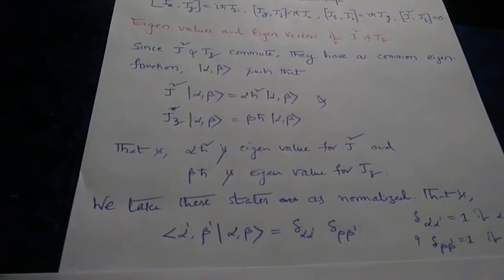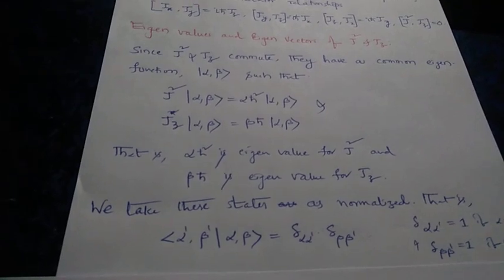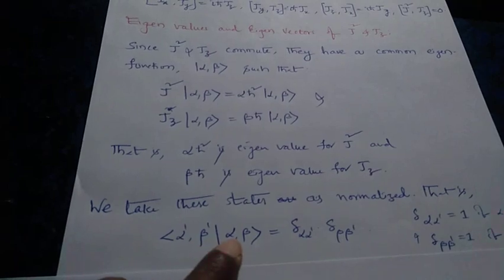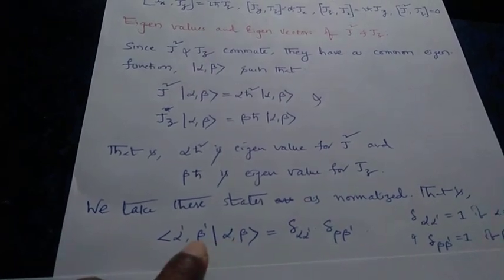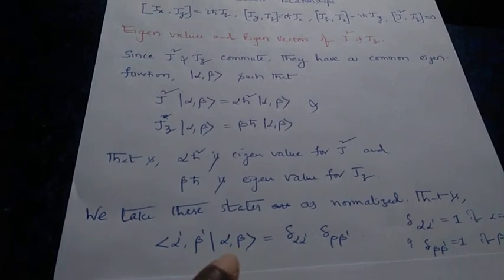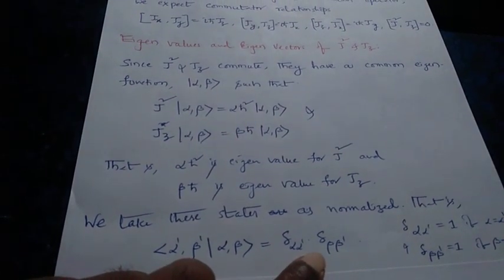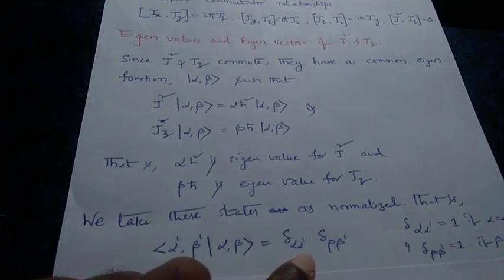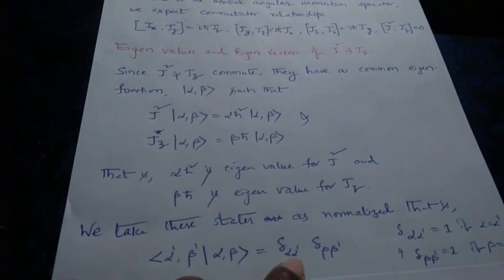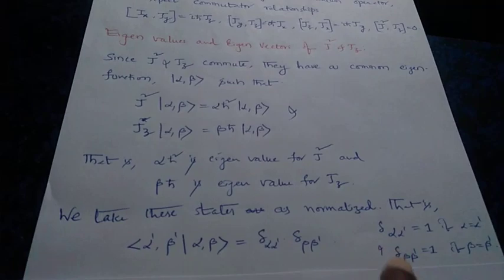We take these eigenkets as normalized, meaning the inner product ⟨α', β'|α, β⟩ equals δ(α, α') times δ(β, β'), which equals 1 only when α equals α' and β equals β', as defined by these delta functions.